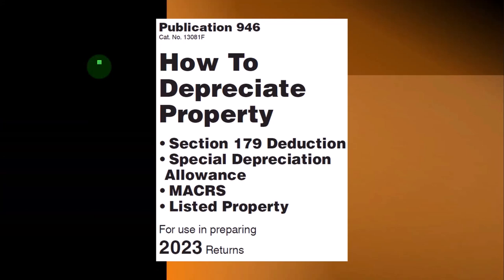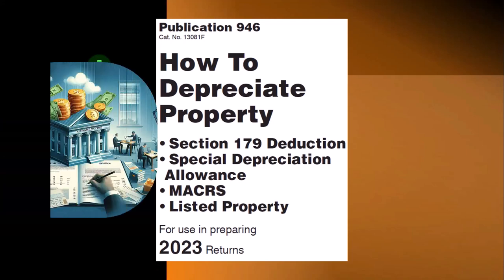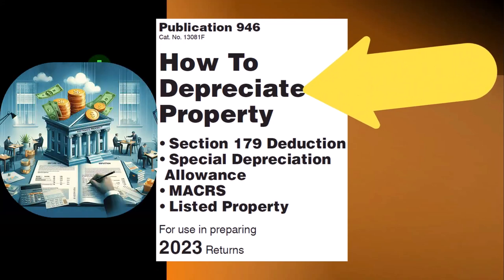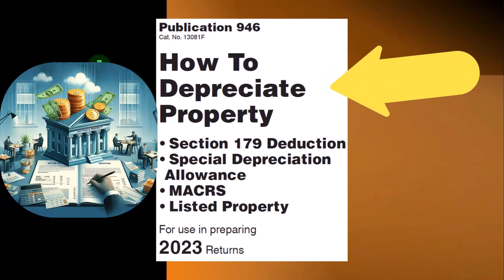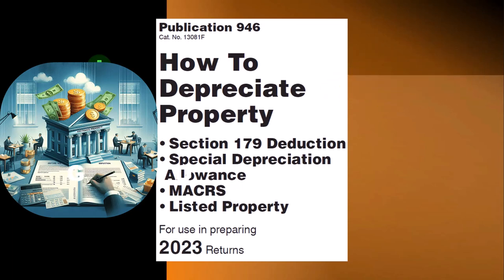Most of this information comes from Publication 946, How to Depreciate Property, Section 179 Deduction, Special Depreciation Allowance, Listed Property, and More, Tax Year 2023, which you can find on the IRS website at irs.gov.